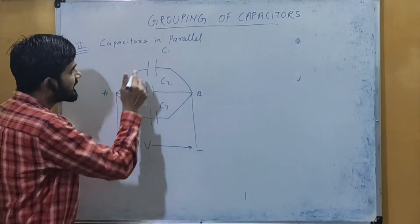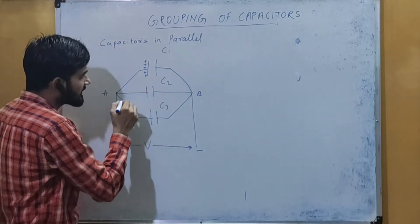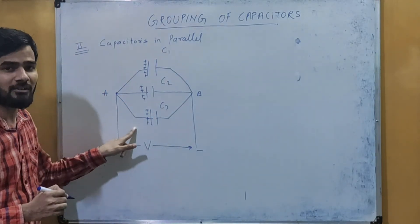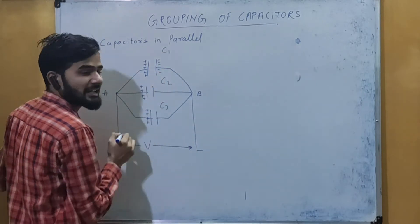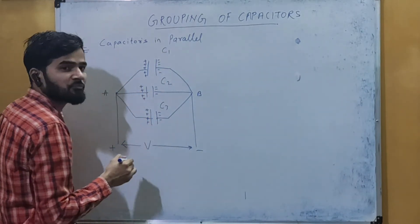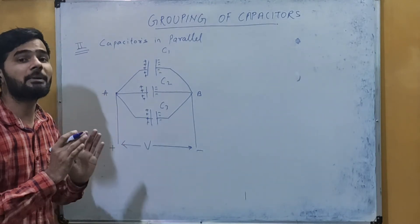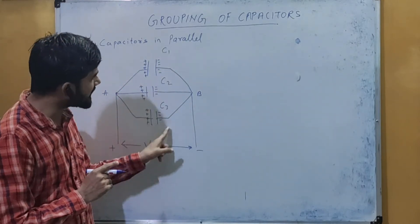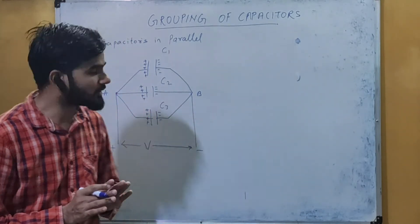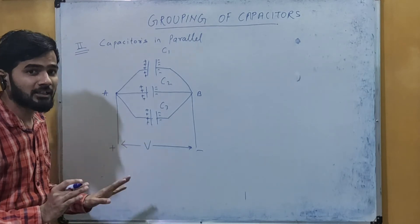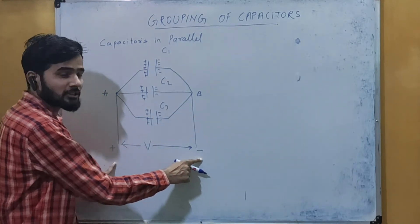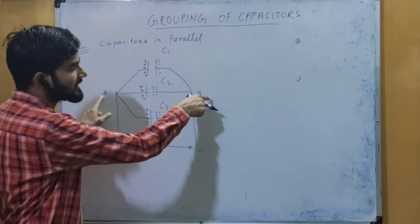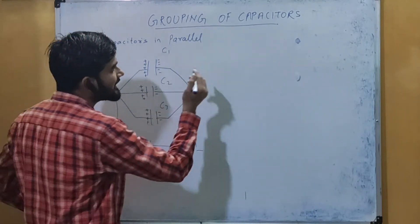In this case, the charge from the battery gets divided. Since the positive terminal is connected to one side, this plate becomes positively charged, and similarly all plates on that side become positive because all are connected to the positive terminal. The other plates become negative. Here there is conduction rather than induction, because all three plates are directly connected to the battery terminals. The potential across each capacitor is the same — equal to V — because all are connected between the same two points A and B.